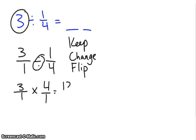And now I'm simply going to multiply, 3 times 4 equals 12, 1 times 1 equals 1, and 12 over 1 equals 12.